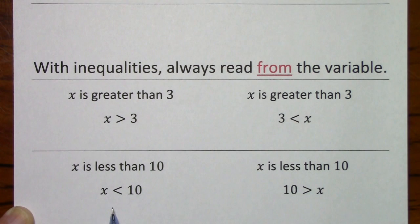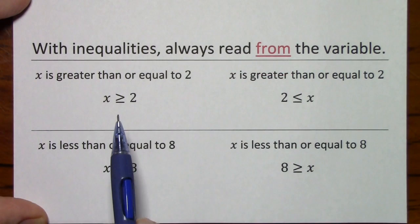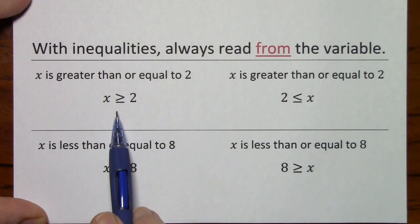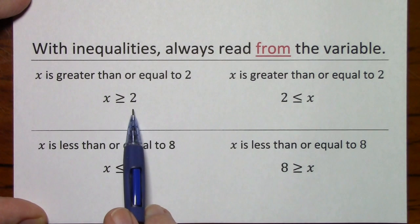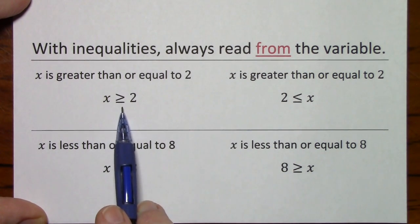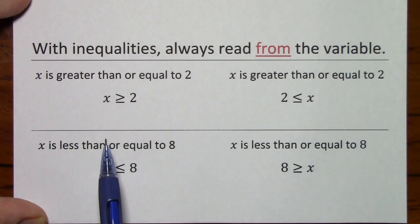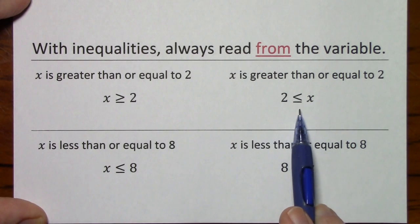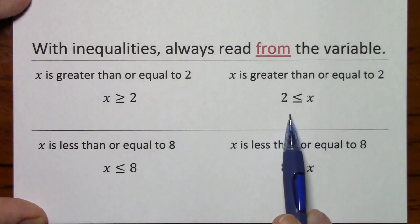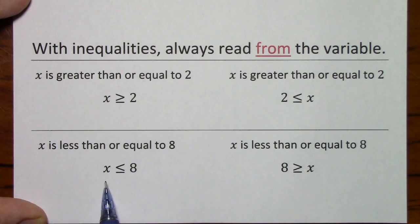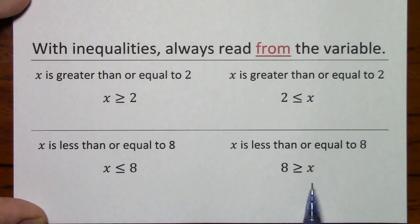Down here we have x is less than 10. And with the other inequality symbol, x is greater than or equal to 2. Notice the 'or equal' part has part of an equal sign. And finally, x is less than or equal to 8.